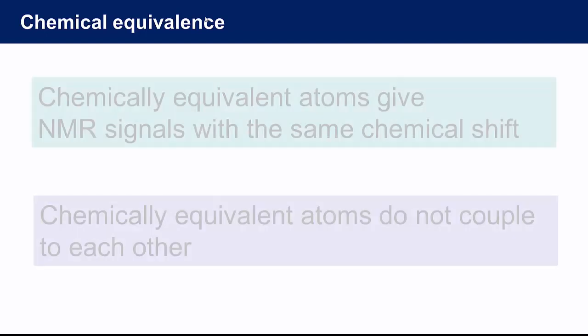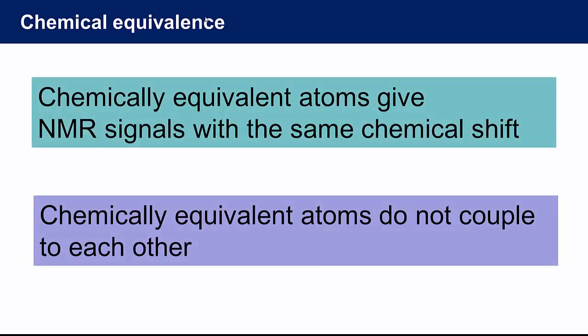So let's start by unpacking this term chemical equivalence. You may have heard it said that in NMR spectroscopy chemically equivalent atoms will give a single signal. Well that makes sense because the chemical shift of a particular atom is determined by the environment of that atom. Atoms in the same environment will give signals in the same place in the NMR spectrum. It's also true that chemically equivalent atoms do not couple to each other.